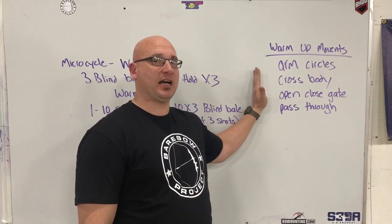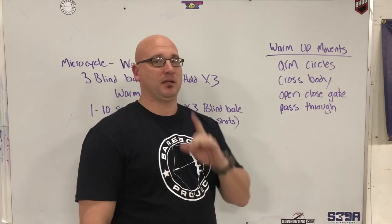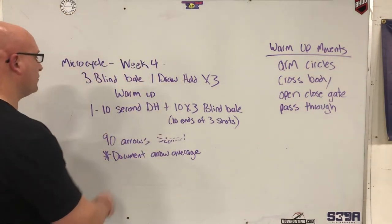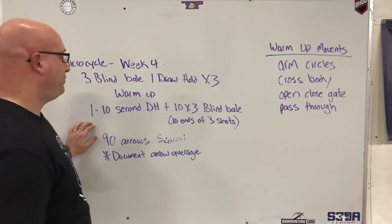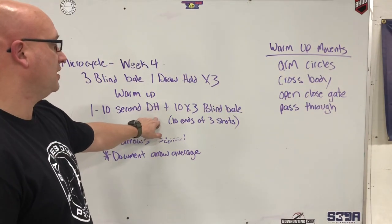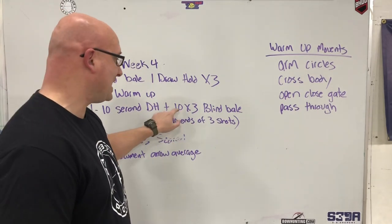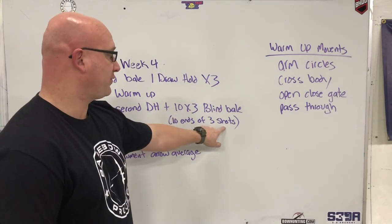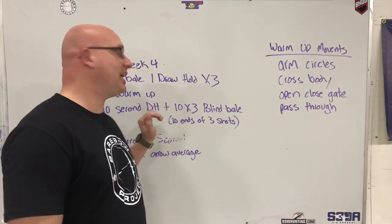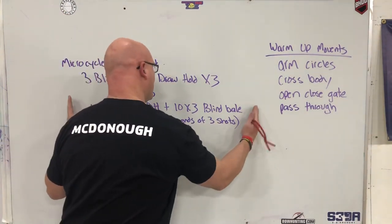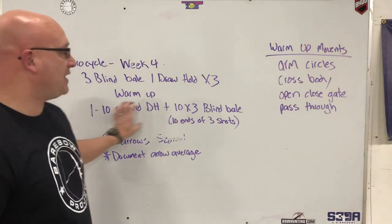Don't stretch cold. Okay, don't stretch cold. Then with going through your programming, you're going to go into one 10 second draw hold and then 10 by 3 of blind bail. So you're going to do a 10 second draw hold, then you're going to shoot 10 ends of three shots of blind bail to get started. That's your cash in, you're cashing in, that's what you need to pay the piper in order to get into the fun part of the training. Once you have that completed, you're going to do 90 arrows scored.